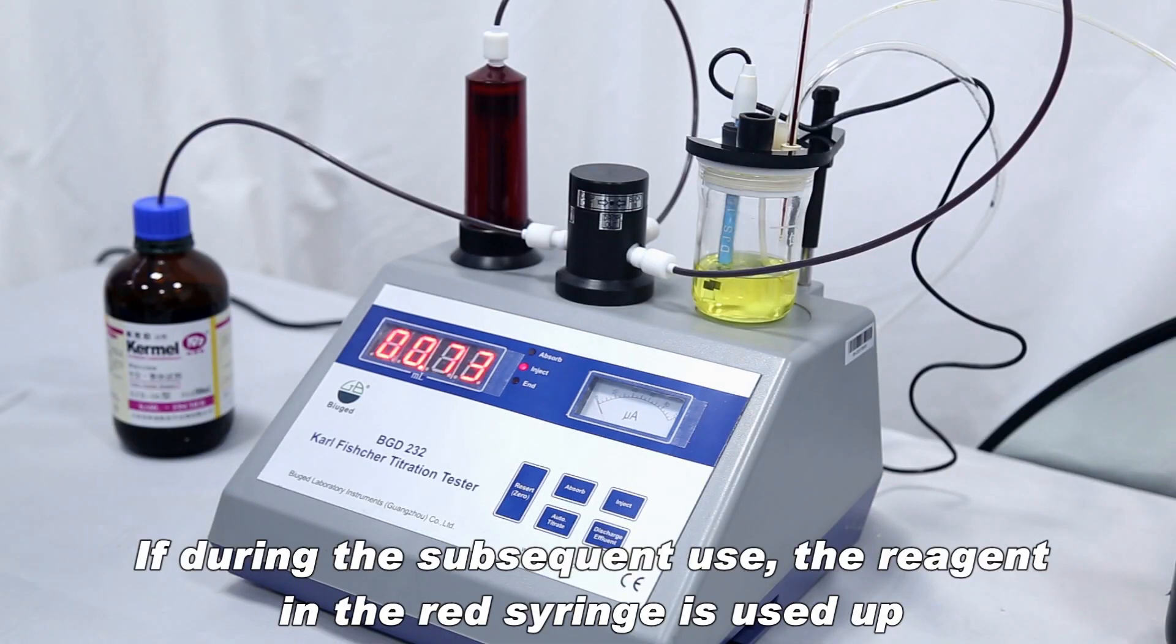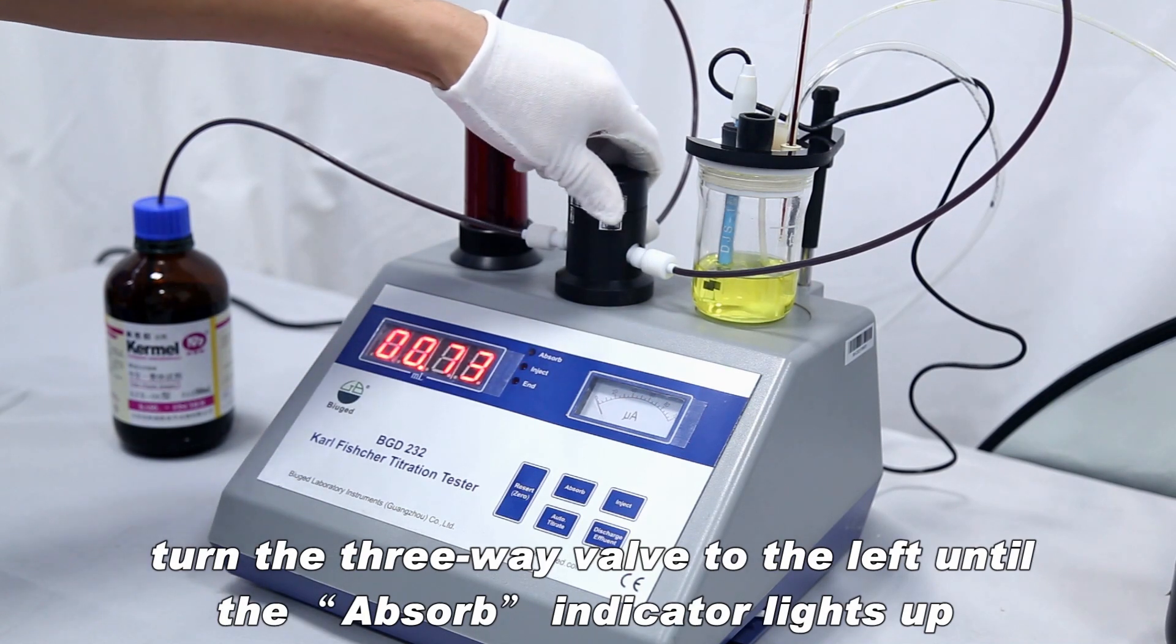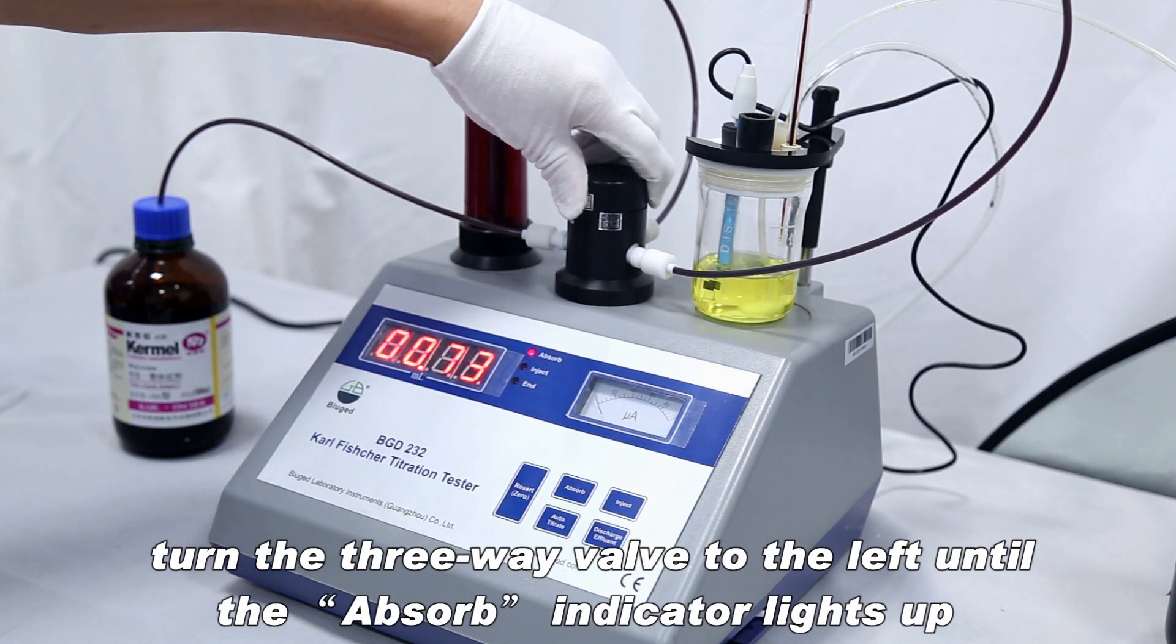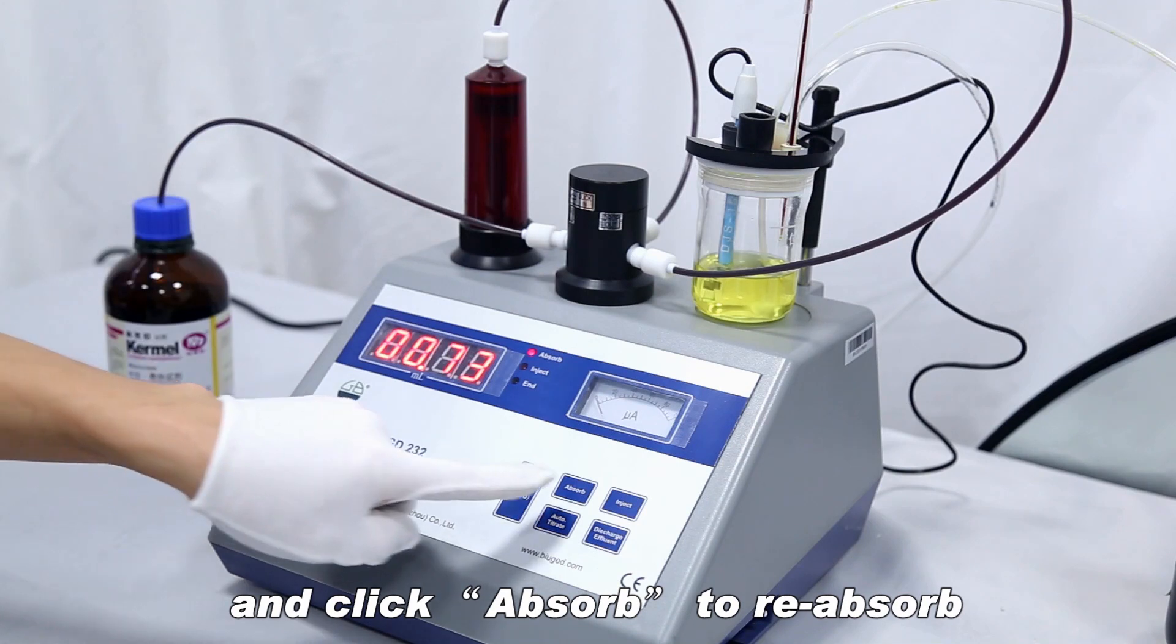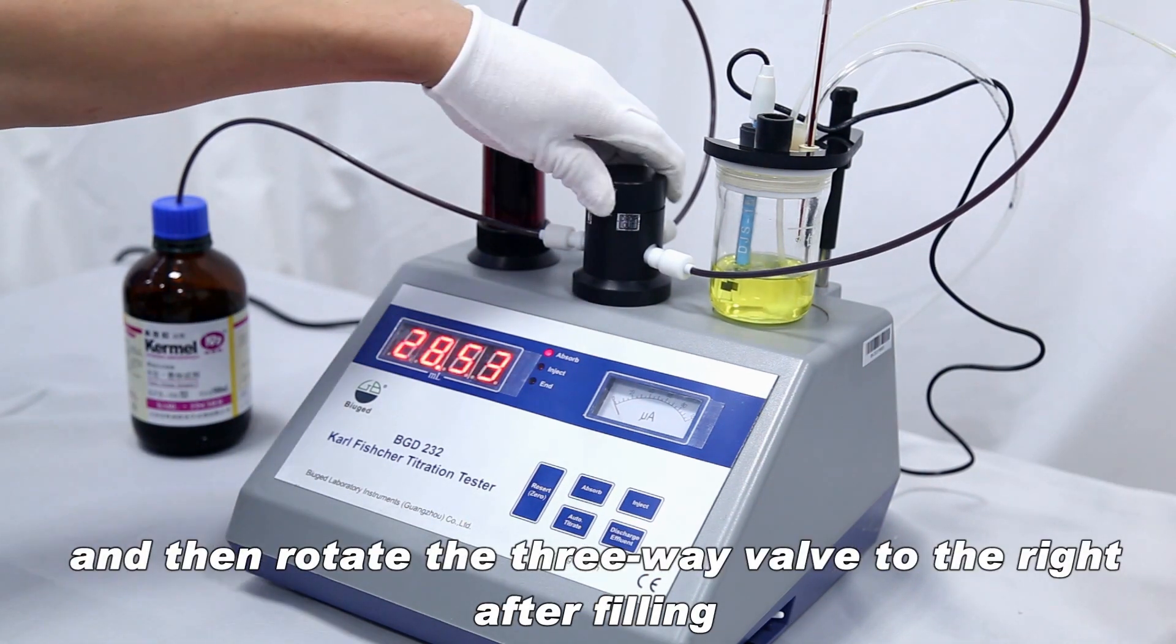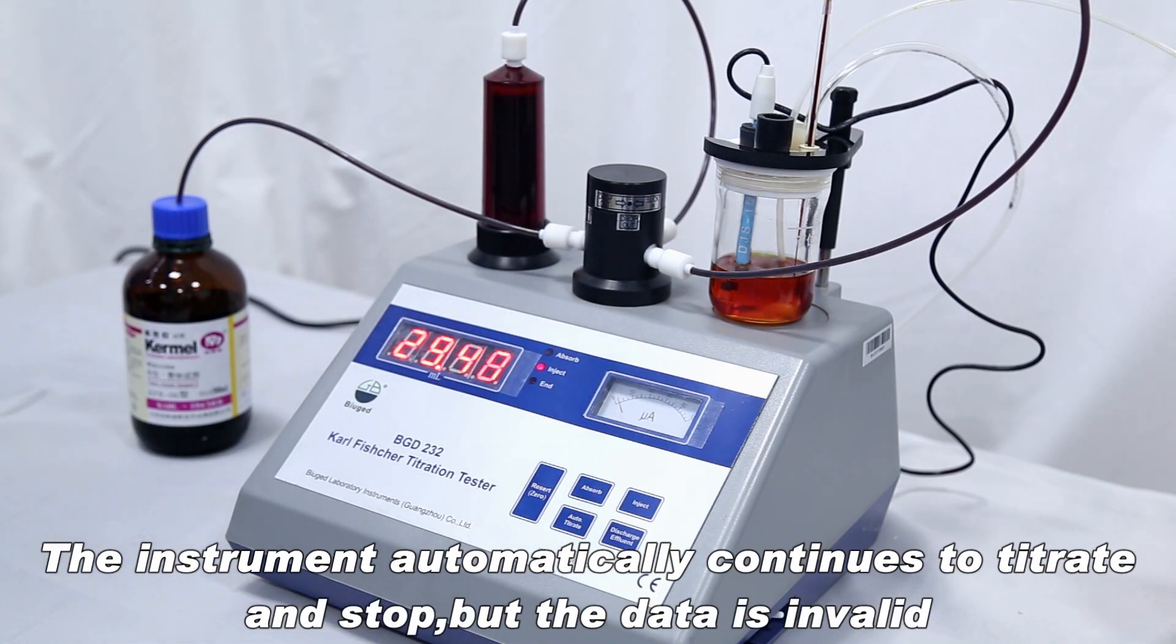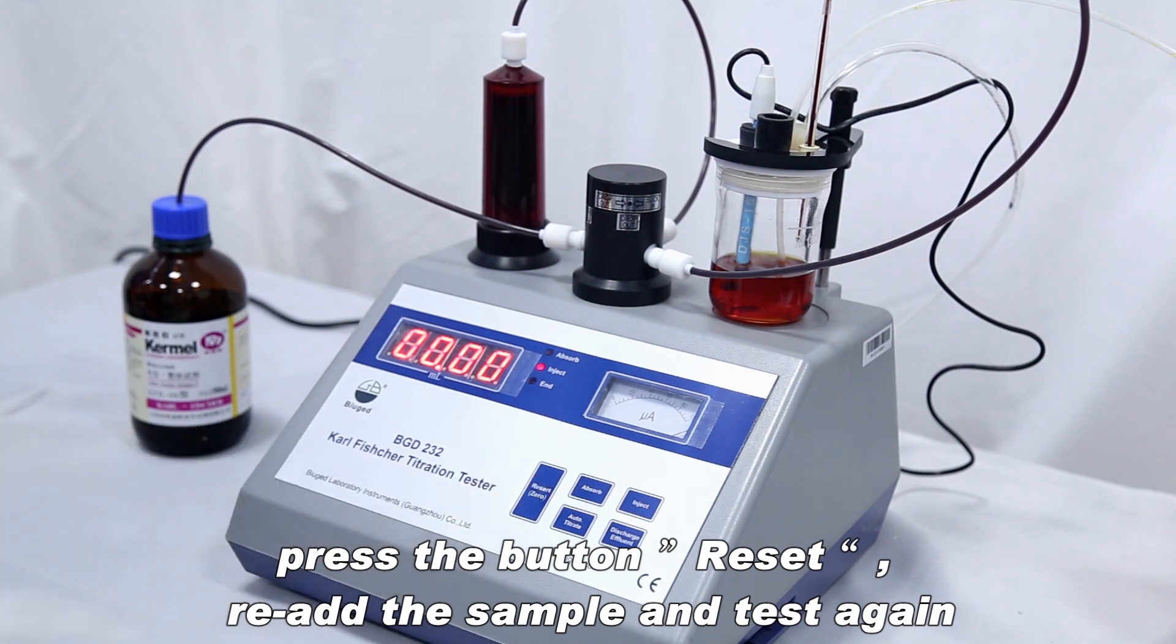If during the subsequent use the reagent in the red syringe is used up, turn the 3-way valve to the left until the absorb indicator lights up and click absorb to reabsorb. And then rotate the 3-way valve to the right after filling. The instrument automatically continues to titrate and stop but the data is invalid. Press the button reset, re-add the sample and test again.